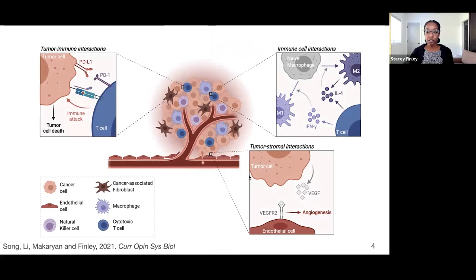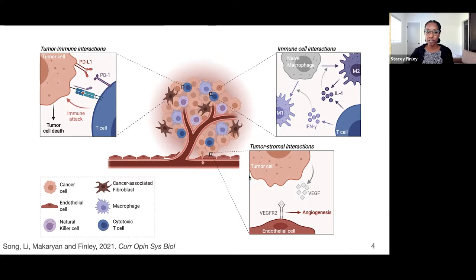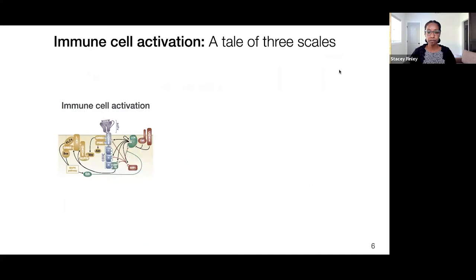I'll motivate the need to explore immune cells and other cells within the tumor microenvironment, because there are many different interactions between cell populations — between tumor and immune cells, such as how T cells can mediate tumor cell killing and how tumor cells can lead to T cell exhaustion. There are also interactions between tumor cells and stromal cells, for example tumor cells secreting VEGF to promote new blood vessel formation by activating endothelial cells, and interactions between different immune cell subpopulations, such as T cells influencing the differentiation of naive macrophages into different cell states. In my lab we apply mechanistic and data-driven modeling to understand cell signaling, predict tumor growth, and explore treatment strategies.